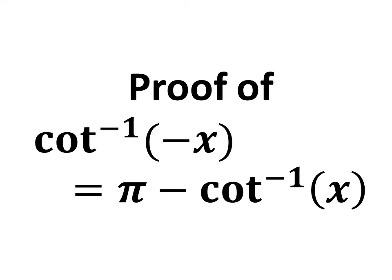It can also be said as to prove arccot of minus x is equal to pi minus arccot of x, as inverse of cotangent is also known as arccotangent.